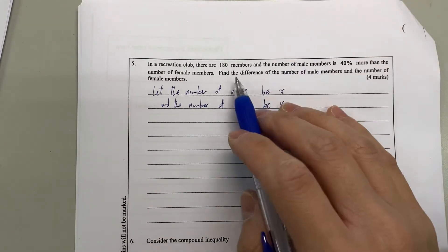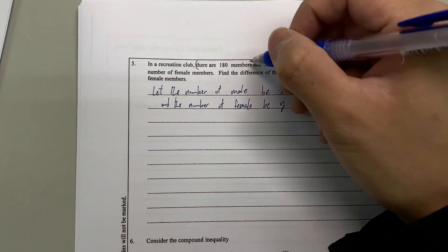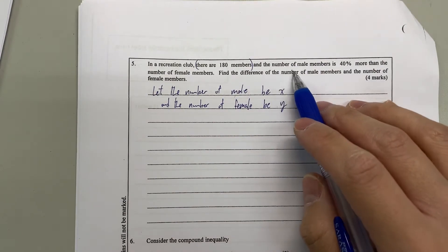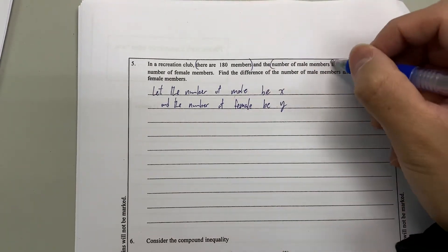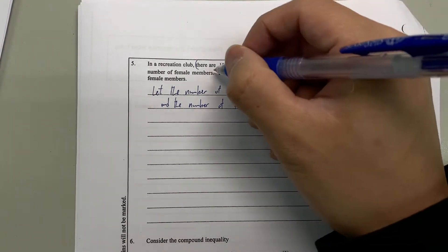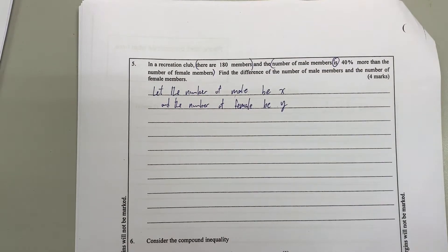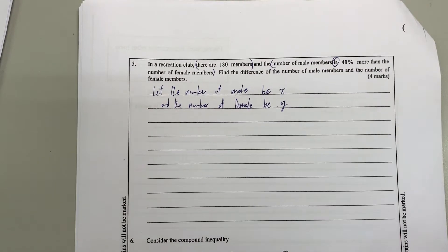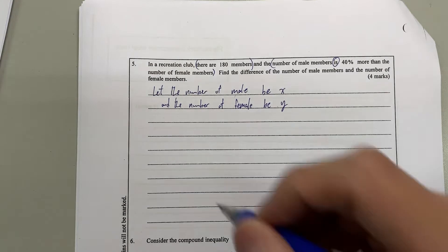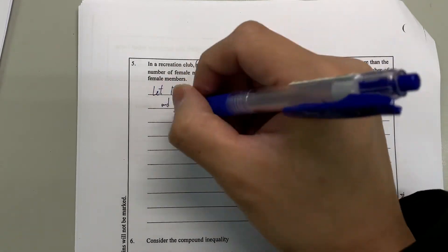So there are two equations. The total number is 180 members. The number of male is 40% more than female. This is the second sentence. So it's obviously about a simultaneous equation. We are going to translate the first one.